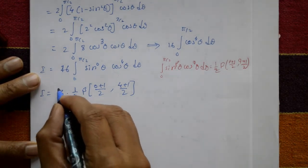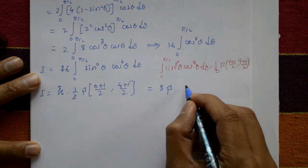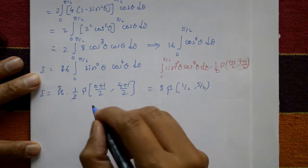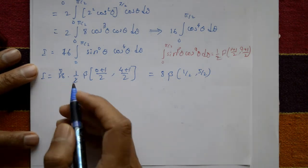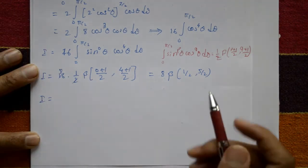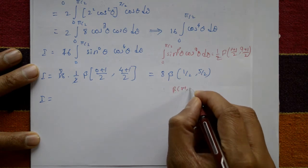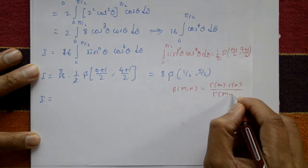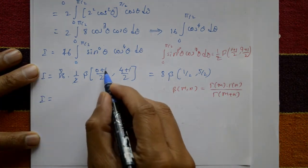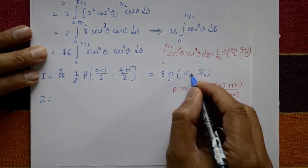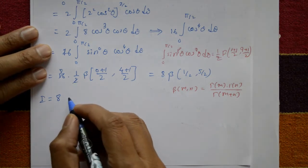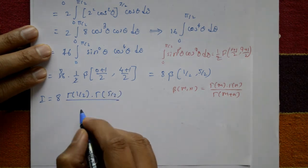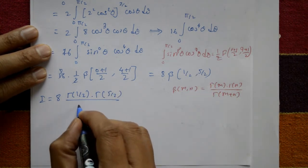This simplifies to 8 times beta of 1 by 2 and 5 by 2. Using the relation between beta and gamma functions: beta(m, n) equals gamma(m) times gamma(n) divided by gamma(m plus n). So this equals 8 times gamma(1/2) times gamma(5/2) divided by gamma(1/2 + 5/2), which is gamma(3).